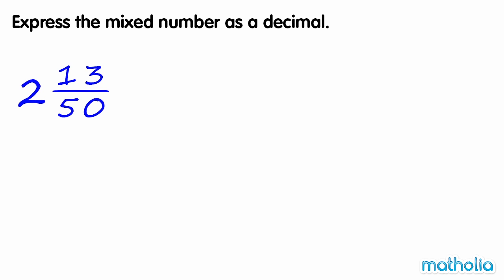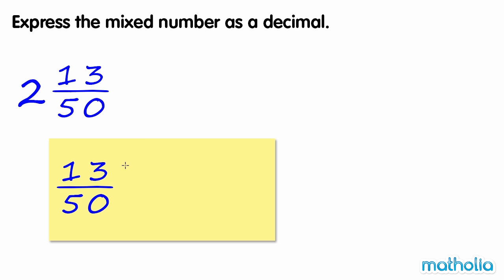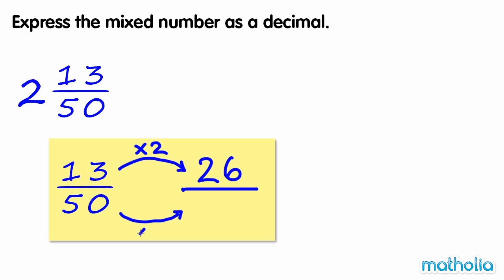Express the mixed number as a decimal. Let's find an equivalent fraction of 13 fiftieths where the denominator is 100. 13 fiftieths is equal to 26 hundredths.